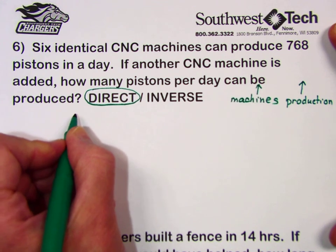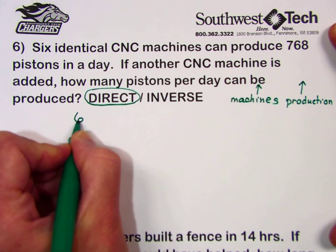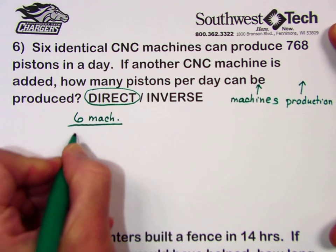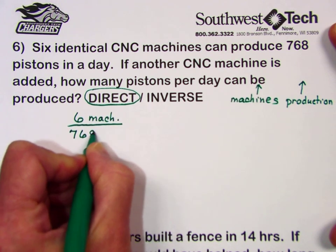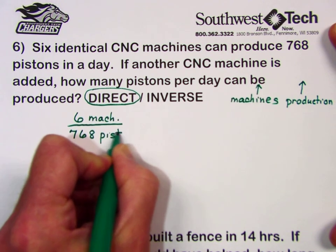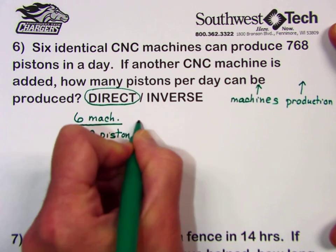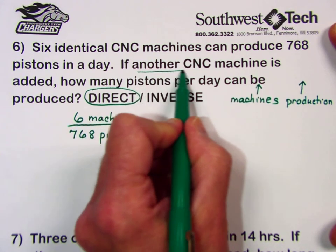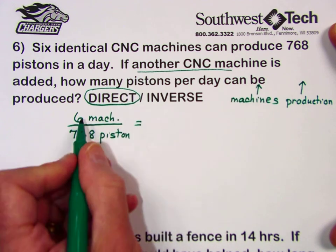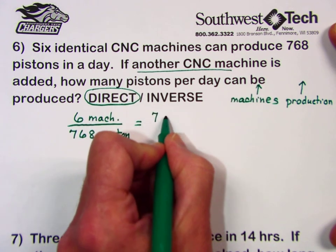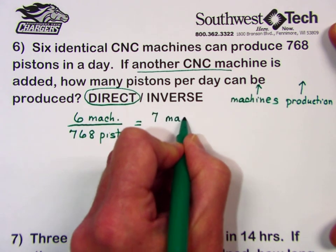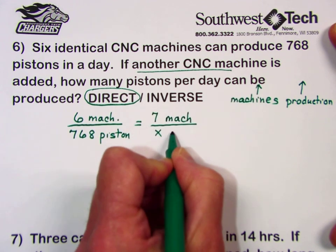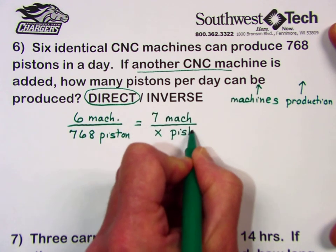To solve this, I take the original information: six machines that produced 768 pistons, and compare it to the new situation — adding another CNC machine, which increases our six to seven machines — over the unknown number of pistons that will result.